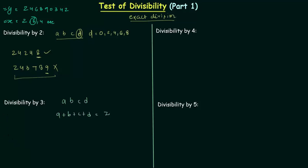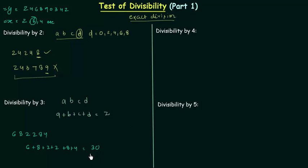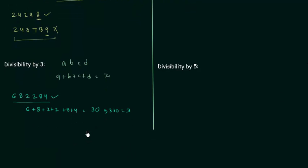Let's understand with an example. Take the number 682284. We add its digits: 6 + 8 + 2 + 2 + 8 + 4. That gives 6 + 8 = 14, 14 + 2 = 16, 16 + 2 = 18, 18 + 8 = 26, 26 + 4 = 30. Since 30 is divisible by 3, the number 682284 is divisible by 3. You can also add the result again: 3 + 0 = 3, which is divisible by 3.